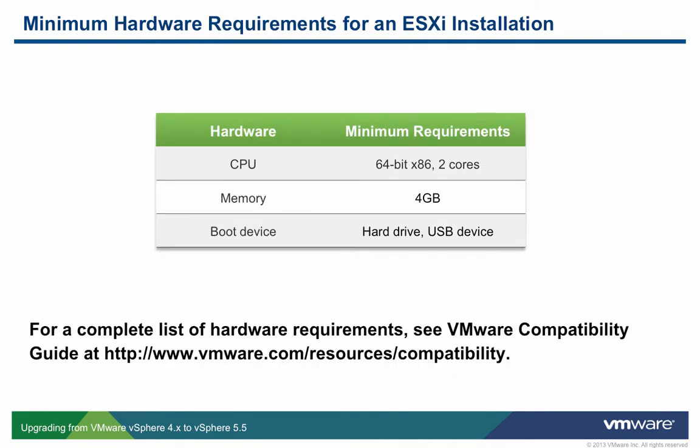The physical server that ESXi 5.5 runs on must be equipped with two or more 64-bit cores, 4 gigabytes of RAM, and directly attached local storage or SAN-based storage.